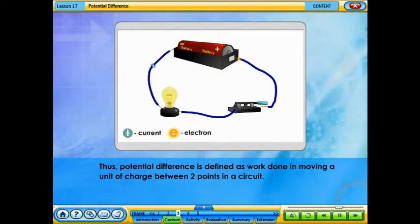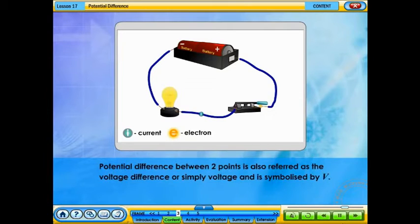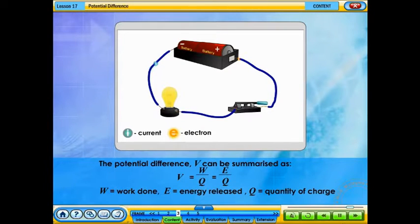Thus, potential difference is defined as the work done in moving a unit of charge between two points in a circuit. The work done is equivalent to the electrical energy used to move the charge between the two points. The potential difference between two points is also referred to as the voltage difference, or simply voltage, and is symbolized by V. It can be summarized as: V = W/Q = E/Q, where W equals work done, E equals energy released, and Q equals quantity of charge.